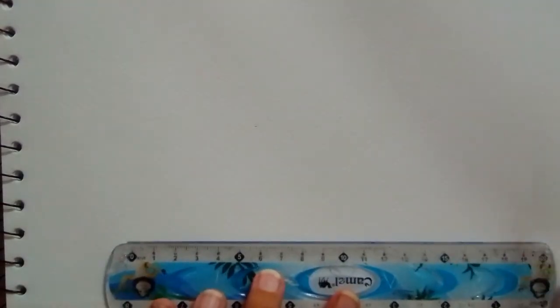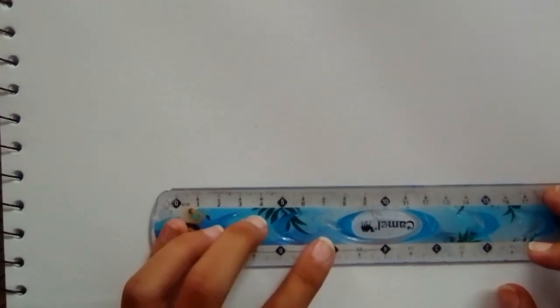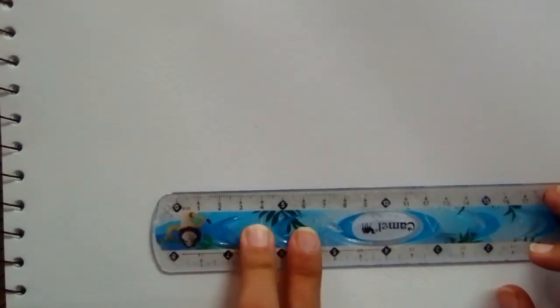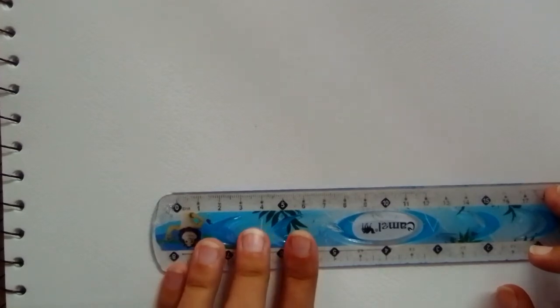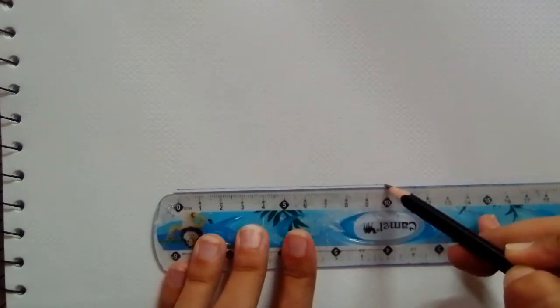So first we have to make the internal structure of the drawing. For that we have to draw a line of any measurement, but I'll draw a line of 10 centimeters. Now draw another line of the same measurement right above the previous line.